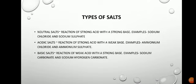Acidic salts are those which form an acidic solution when dissolved in water. Examples include ammonium chloride and ammonium sulfate. Ammonium chloride is formed by the reaction of ammonium hydroxide — a weak base — with hydrochloric acid — a strong acid. To confirm that a salt is acidic, dissolve it in water in a test tube and dip a blue litmus paper into it. The blue litmus paper will turn red, because the solution contains acidic properties.